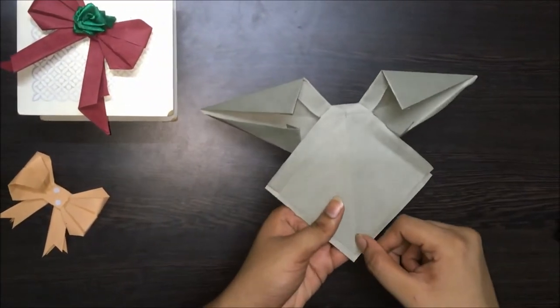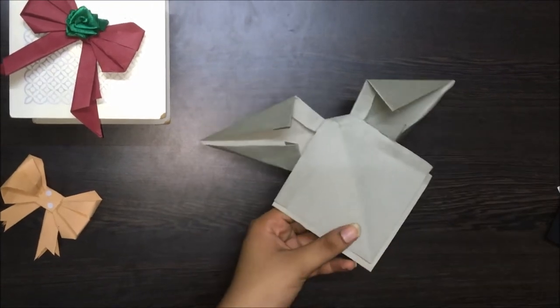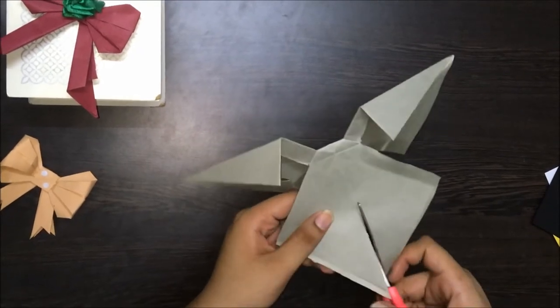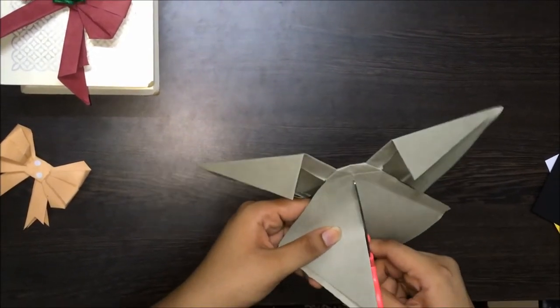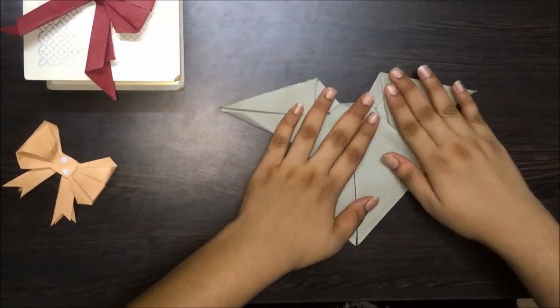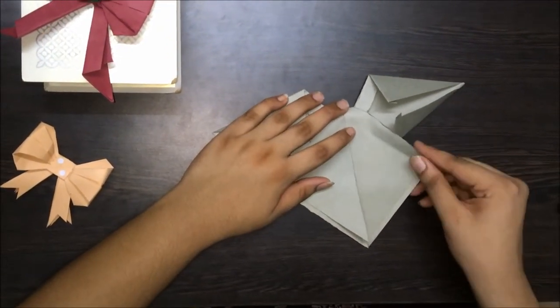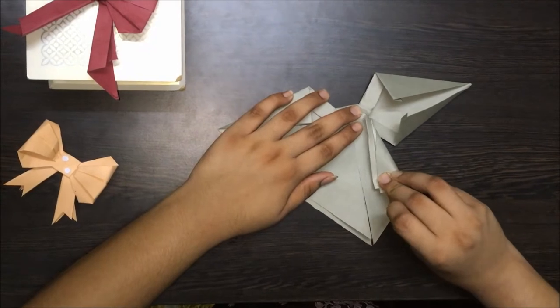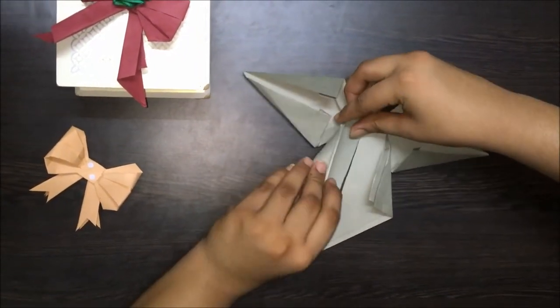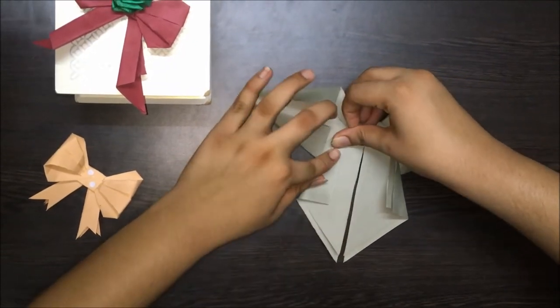Now there's a crease that runs through the square. So let's cut along this crease. Now place it down. Pick these two corners of the paper and fold it inwards. Do the same on the other side.